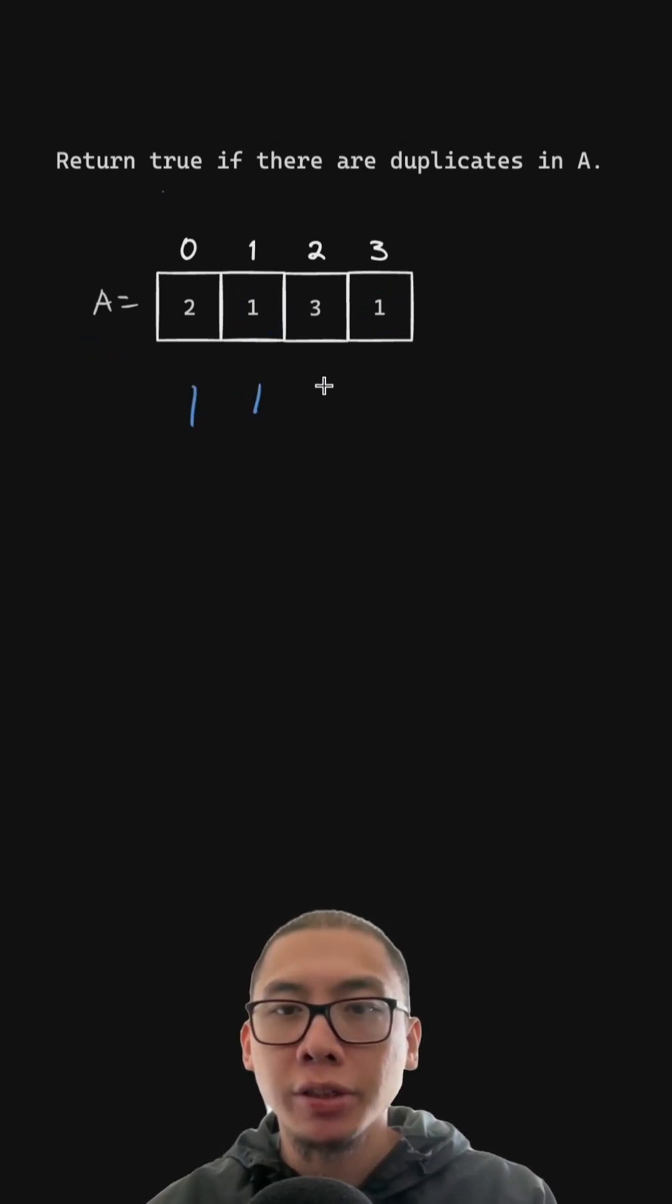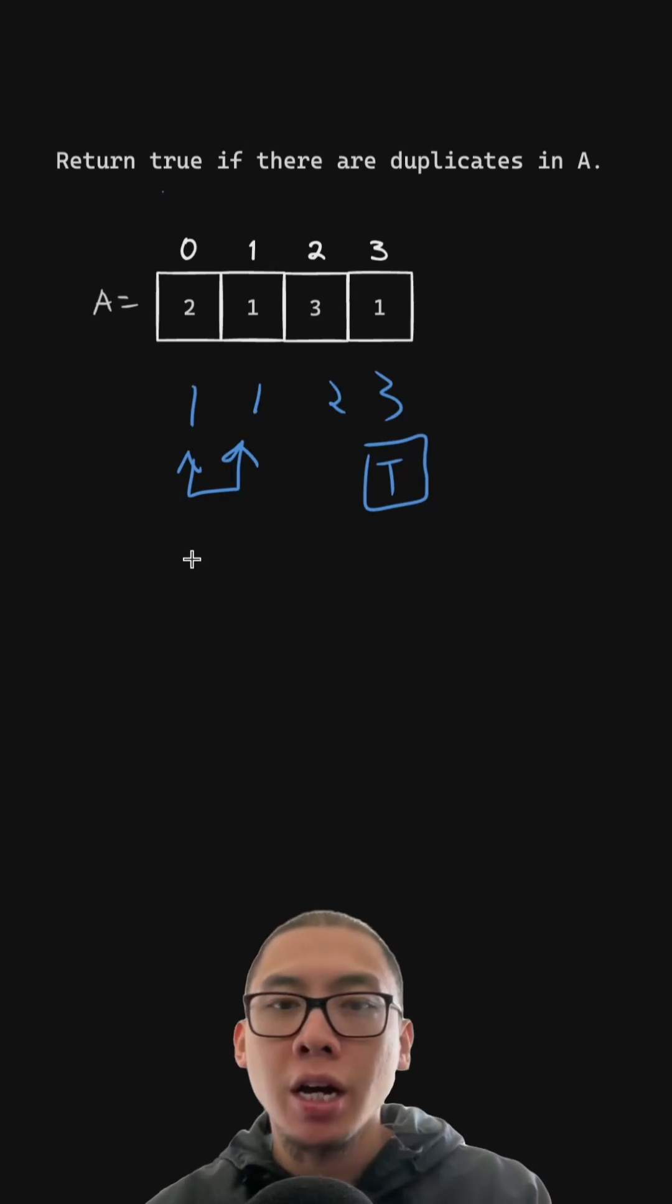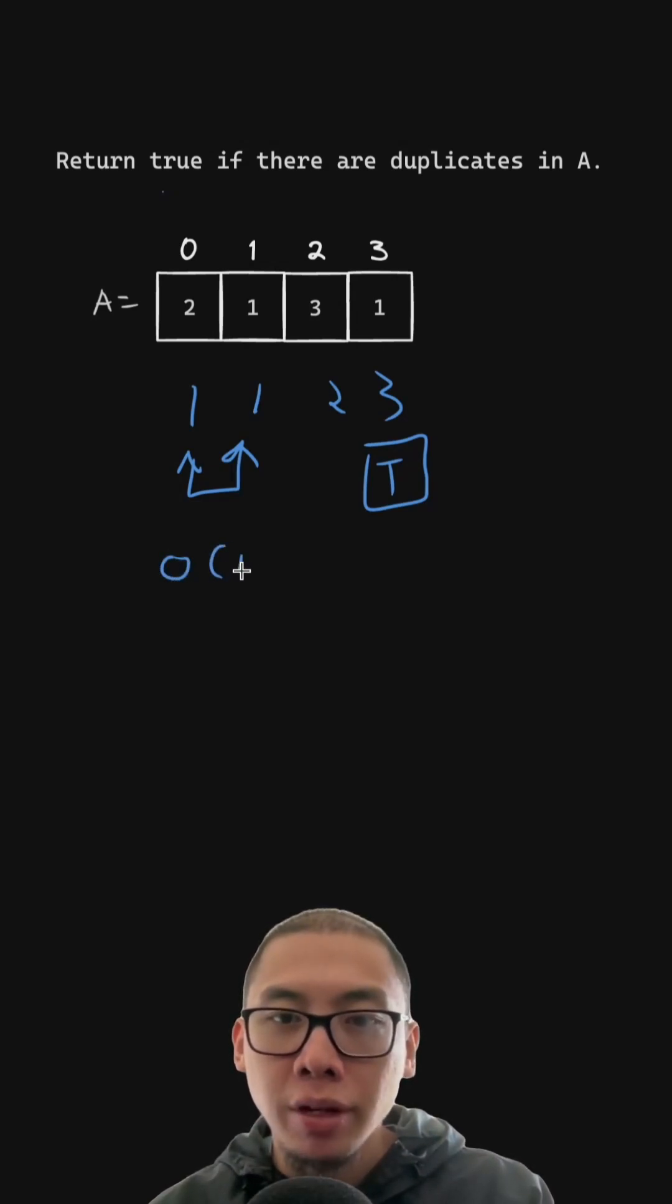The first thing we could try is to sort our input array and if there are any adjacent elements equal to each other, then we could return true. However, this has a time complexity of n log n because we are sorting our input array.